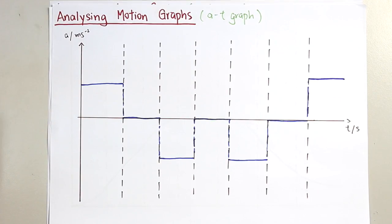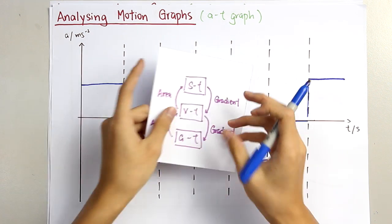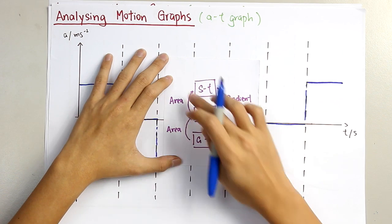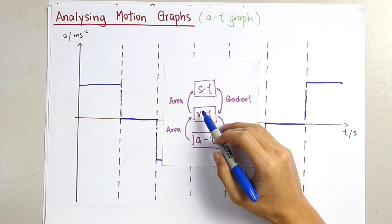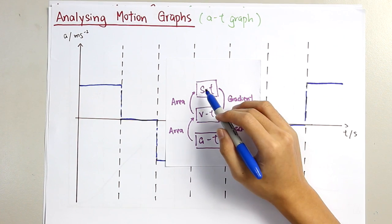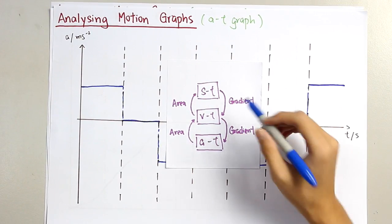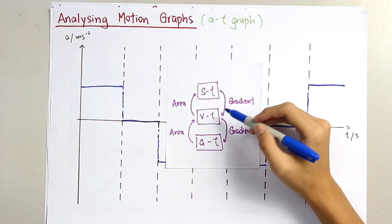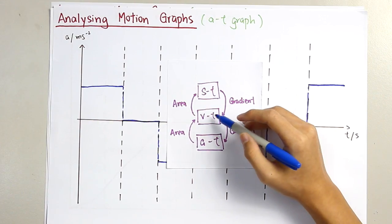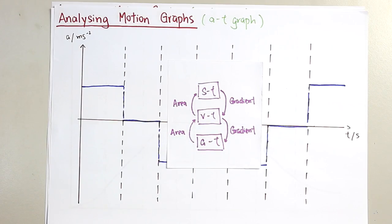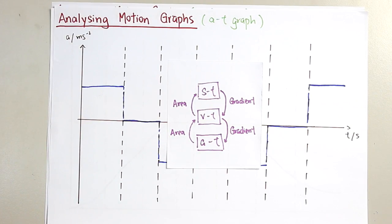That's all for analyzing motion graphs. Make sure you remember these criteria: the area for the VT graph represents displacement; the area for the AT graph represents velocity; the gradient for the ST graph represents velocity; and the gradient for the VT graph represents the acceleration. I hope you can understand well for this topic. We'll see you next time for the other chapters. Thank you.